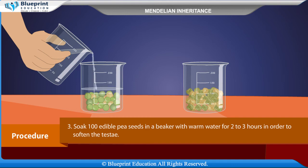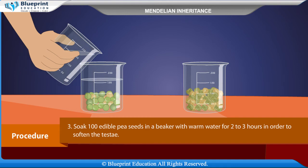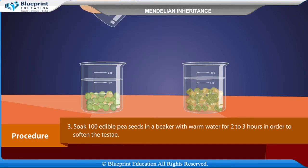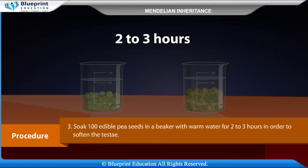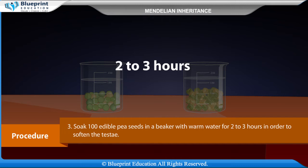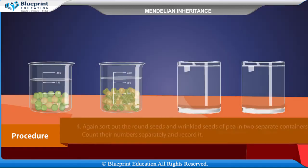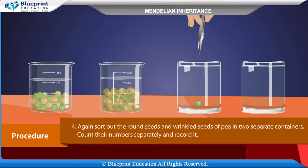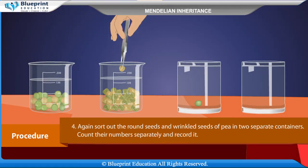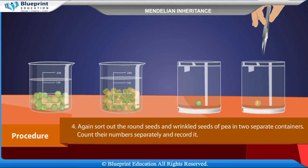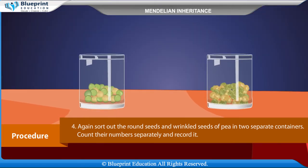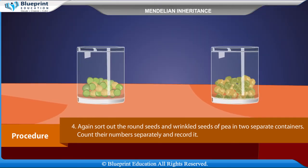Soak 100 edible pea seeds in a beaker with warm water for 2-3 hours in order to soften the testa. Again, sort out the round seeds and wrinkled seeds of pea in two separate containers, count their numbers separately and record it.